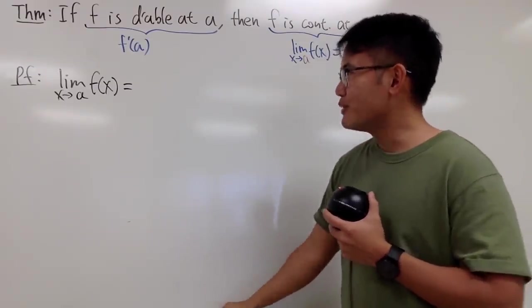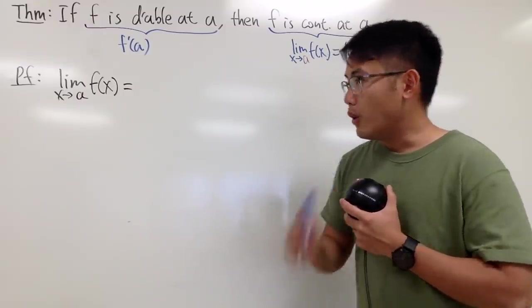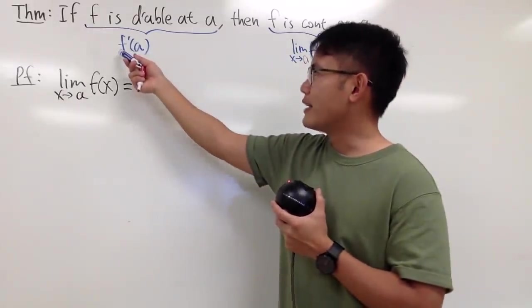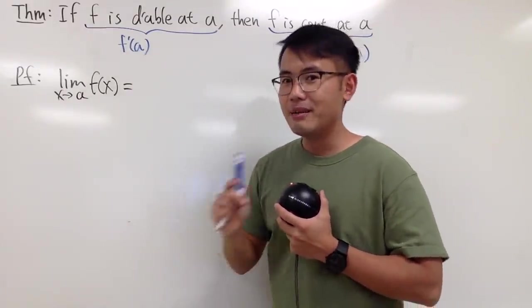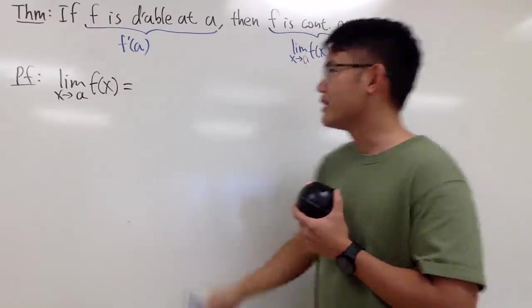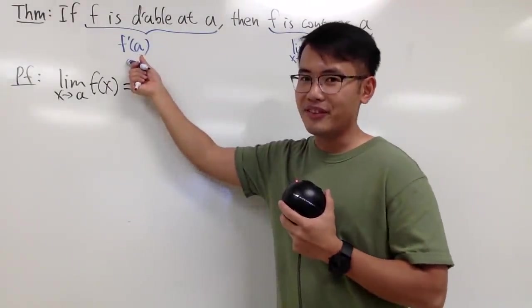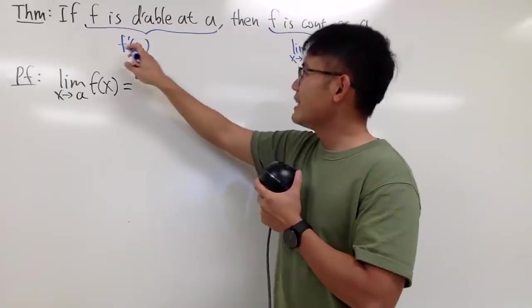And in fact, I haven't put down the complete version of this. Earlier, I just told you guys that I can write down f' exists. But keep in mind, this right here, I can write it down as a limit as well. Because right here, we have limits already. Why don't we put down the limit definition of this as well, right?